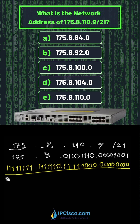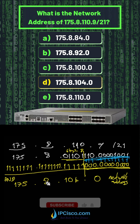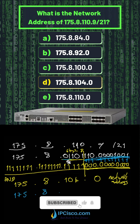Then I will use the AND operation between these two numbers. As a result, we will find the network address of this IP address — here all the host bits are zeros. And when I change these bits to one, we will find the broadcast address for this IP address.